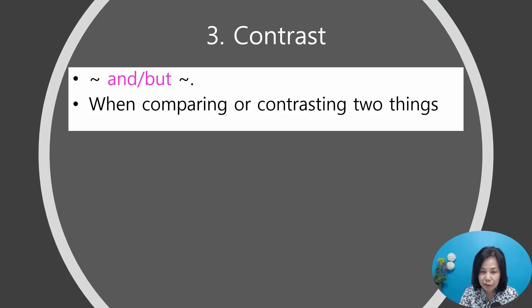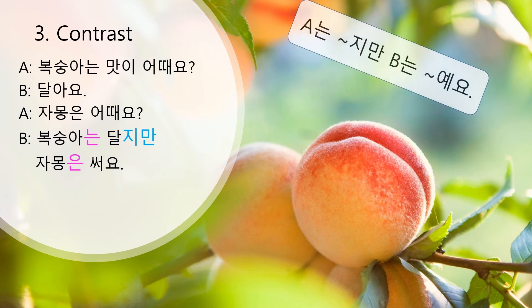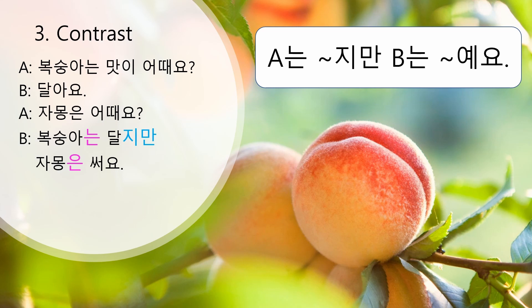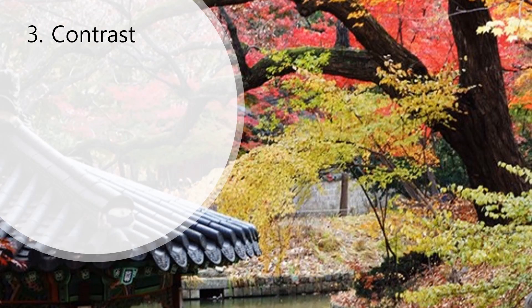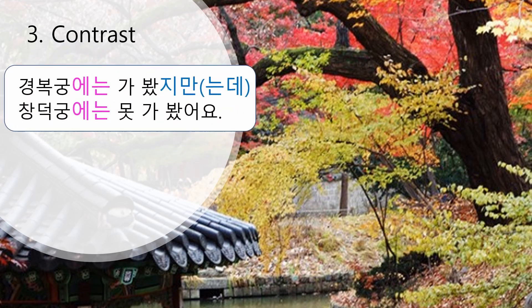Third usage: contrast. 은/는 is used when comparing or contrasting two things. 복숭아는 맛이 어때요? 달아요. 자몽은 어때요? 복숭아는 달지만 자몽은 써요. A useful pattern to memorize: A는 블라블라지만 B는 블라블라이에요. For example: 오전에는 일하지만 오후에는 쉬어요. Now your turn — 'I've been to 경복궁 but I haven't been to 창덕궁': 경복궁에는 가봤지만 (or 가봤는데) 창덕궁에는 못 가봤어요.